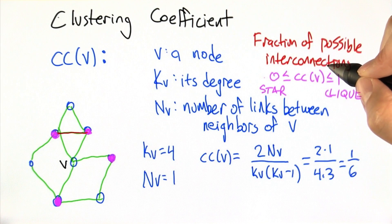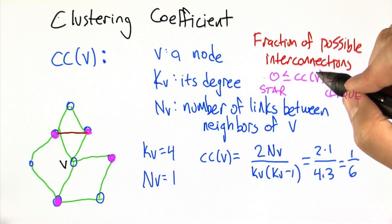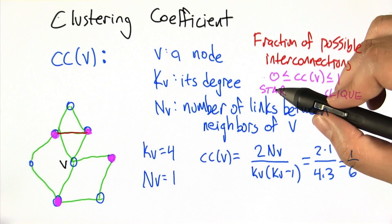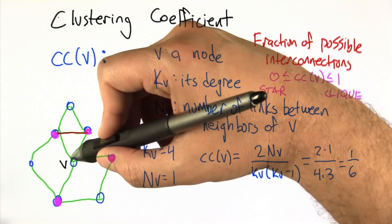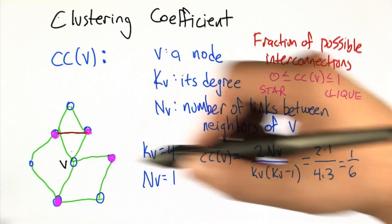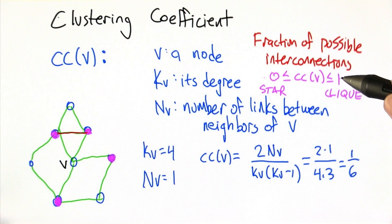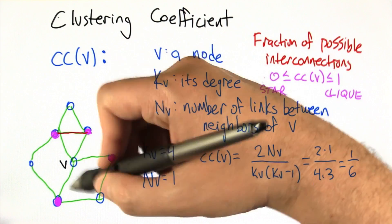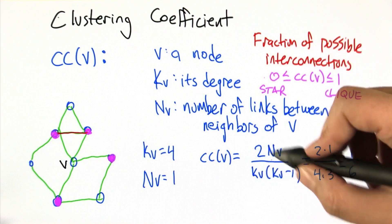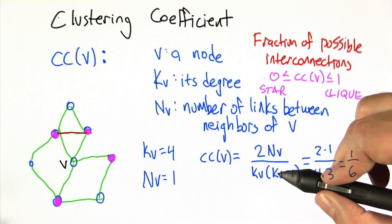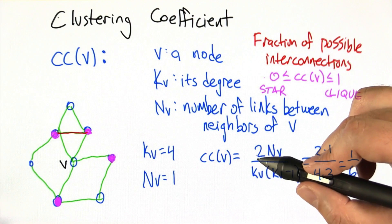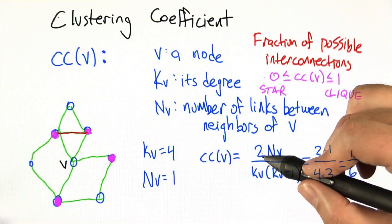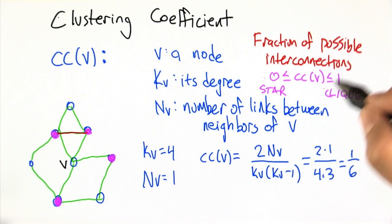What this represents is the fraction of possible interconnections between the neighbors of v. Because it's a fraction, we're expecting it to be something between 0 and 1. We can get 0 if we have something like a star — v has edges going out, but none of those connect to each other. And it can be all the way to 1 if we have a clique, where v is connected to its neighbors and all the neighbors are connected to each other. k_v times (k_v minus 1) all divided by 2 is the maximum number of connections among a set of nodes of size k_v, so we take the reciprocal of that and multiply by n_v to get the fraction.